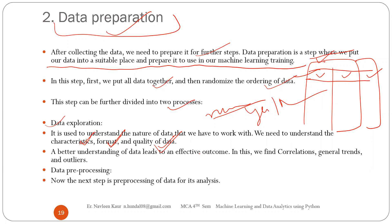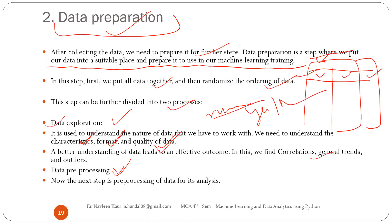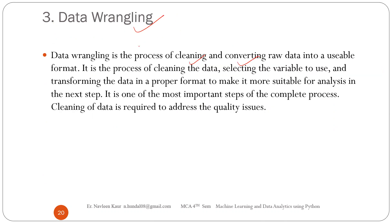A better understanding of data leads to an effective outcome. In data exploration, we find correlations, general trends, and outliers. The next step is pre-processing of data for its analysis. After that, what is data wrangling? Data wrangling is the process of cleaning and converting raw data into a usable format. My main motive is just to clean it, so that I will do in the data wrangling stage.